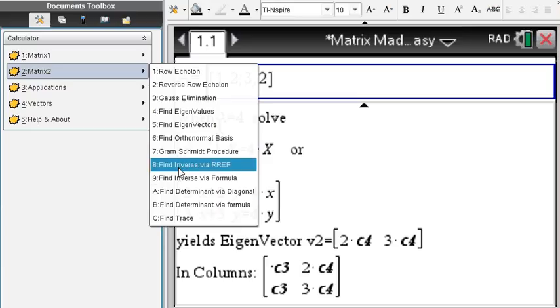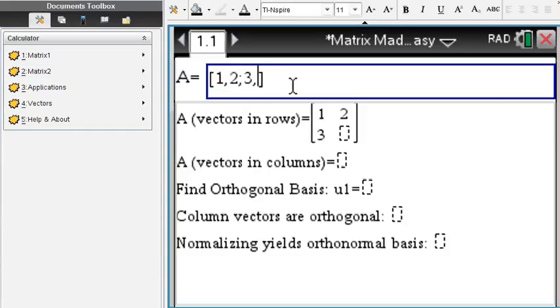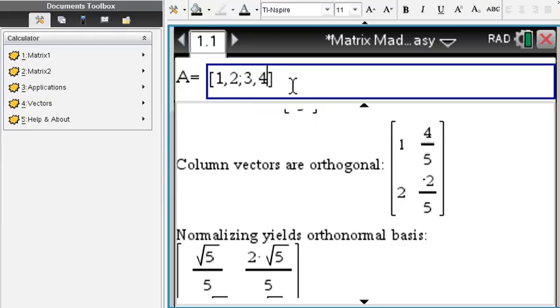What else we got? Find the determinant, find the inverse. The Gram-Schmidt procedure of course finds the orthonormal basis by normalizing the orthogonal basis.